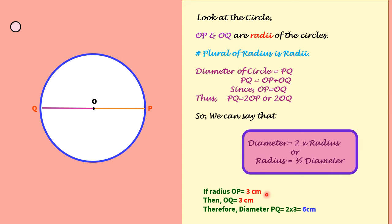Let's understand it more clearly. If radius OP is 3 cm, then the length of radius OQ will also be 3 cm. If OP and OQ are 3 cm each, thus diameter PQ will be 2 times 3, that is 2 into 3 equals 6 cm.